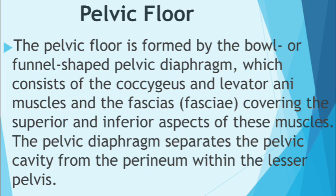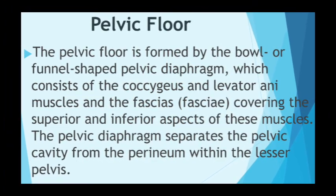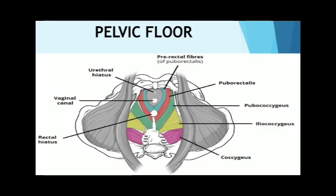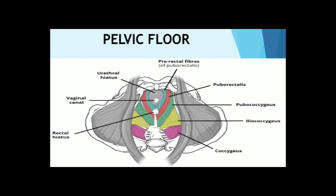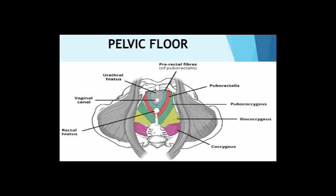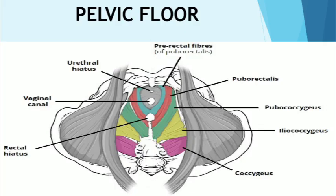The pelvic floor is formed by the bowl- or funnel-shaped pelvic diaphragm, which consists of the coccygeus muscles and levator ani muscles, together with fasciae covering their superior and inferior surfaces. The pelvic diaphragm separates the pelvic cavity from the perineum. Here is an illustration of the pelvic floor — you can see the various muscles in different colors. The coccygeus muscles are shown in pink on the right and left.